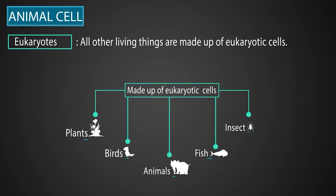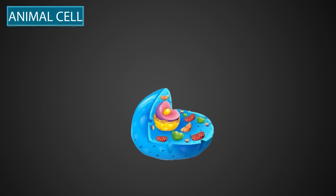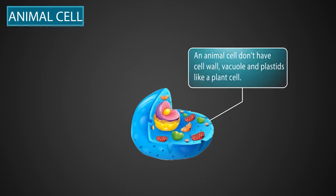Today, we will learn about an animal cell, which is a eukaryotic cell. Animal cells are eukaryotic cells, so they have a true nucleus, and many specialized small bodies, called organelles, for carrying out different functions. An animal cell does not have a cell wall, vacuole, and plastids, like a plant cell.